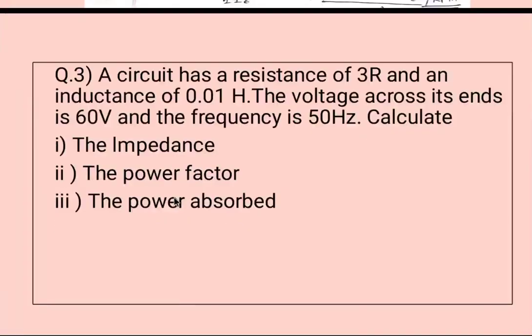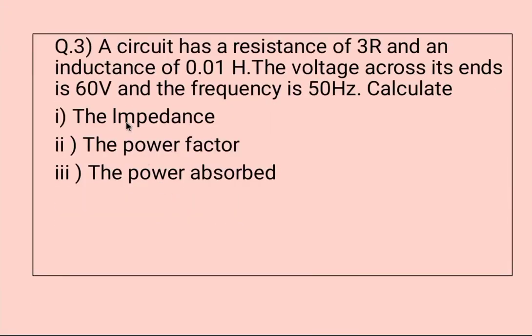Moving to the next question, question number three. A circuit has a resistance of 3 ohm and an inductance of 0.01 henry. The voltage across its ends is 60 volt and the frequency is 50 hertz. Calculate the impedance, the power factor, and the power absorbed.